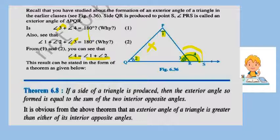Now angle 3 plus angle 4 equals 180 degrees. Why? Because it forms a linear pair of angles, and when angles form a linear pair their sum is 180 degrees. And we have just shown that angle 1 plus angle 2 plus angle 3 equals 180 degrees. Now when we equate these two equations — equation 1 and equation 2 — from both sides angle 3 cancels. What is left? Angle 4 equals angle 1 plus angle 2.